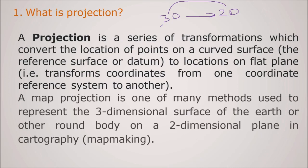It is a series of transformations which convert the location of points on a curved surface with certain reference surface or datum to location on a flat plane. It transforms coordinates from one coordinate reference system to another. Map projection is one of many methods used to represent this 3D surface of the earth or any other round body on a 2D dimensional plane, which we use more often in cartography or map making.